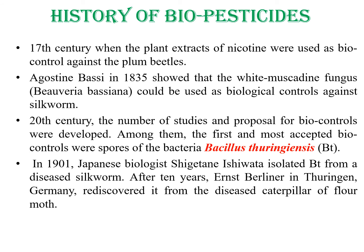Let us know about the history of biopesticides. First, in the 17th century, plant extract of nicotine was used as biocontrol against plum beetles. After that, in 1835, Agustin Bassi showed that the white muscardine fungus could be used as a biological control agent against silkworm.